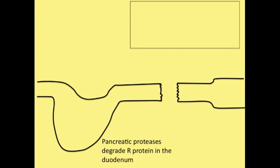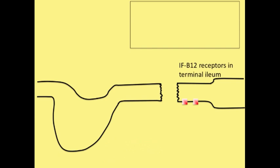Finally, in the terminal ileum, we have intrinsic factor B12 receptors. And that's going to be the endpoint, the end game for B12 absorption from the gut. So let's go through the pathway.